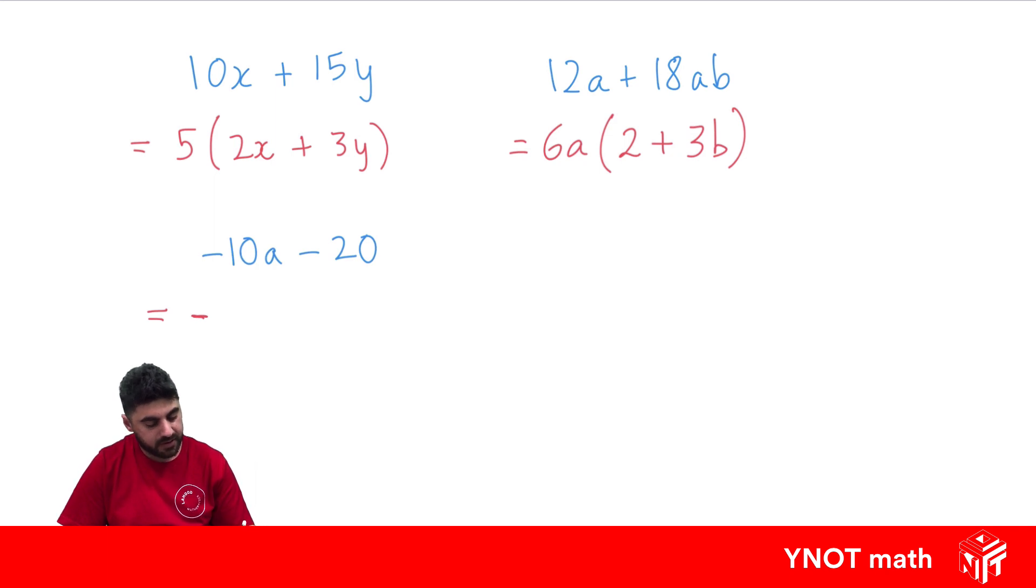Now, out of 10 and 20, the highest common factor is 10, because 10 goes into both of those. And because a is only in one of the terms, I can't take out a. So, what do we need to multiply minus 10 by to get us minus 10a? Well, we just need a.